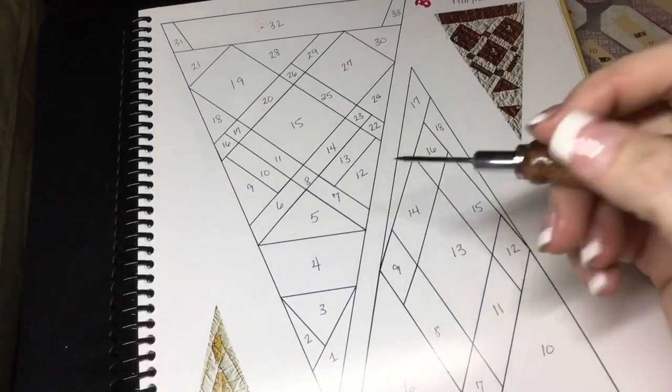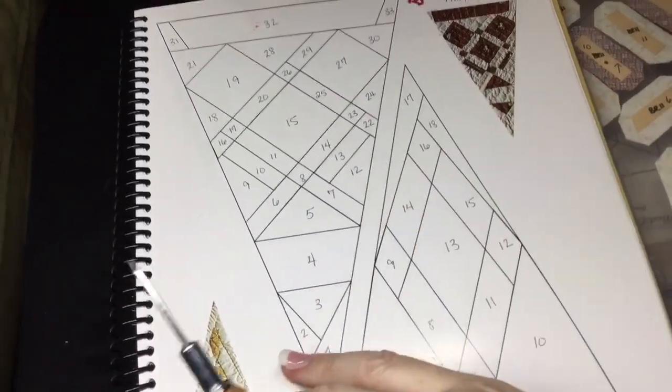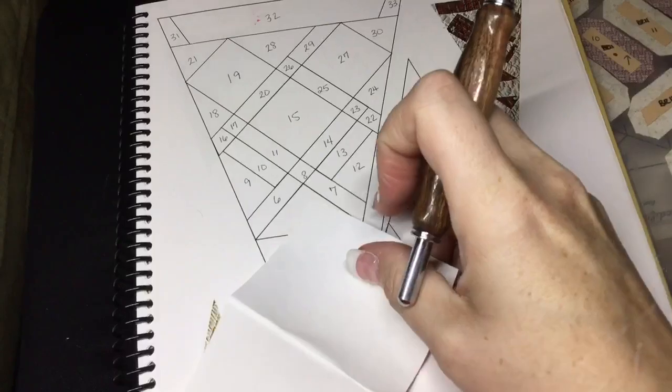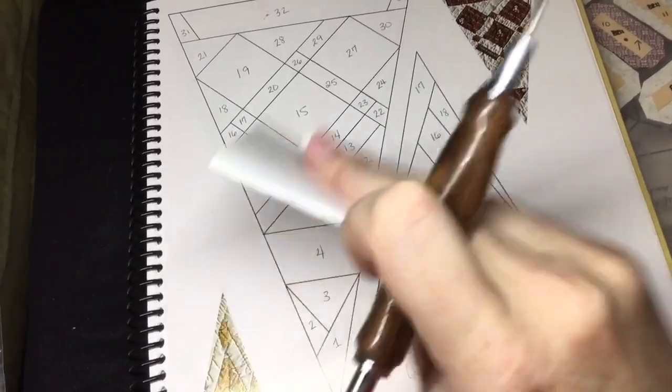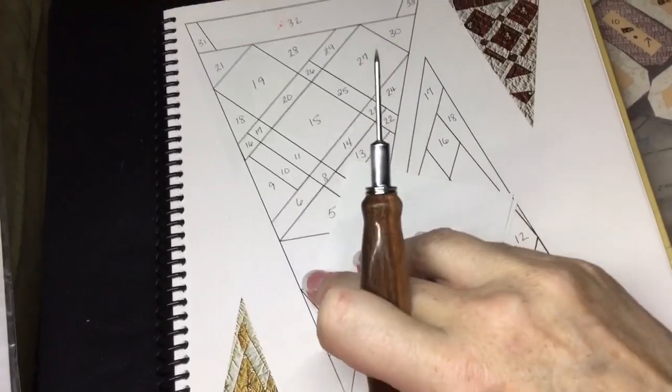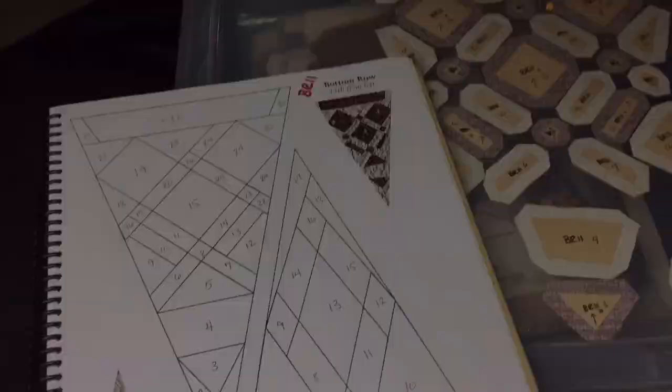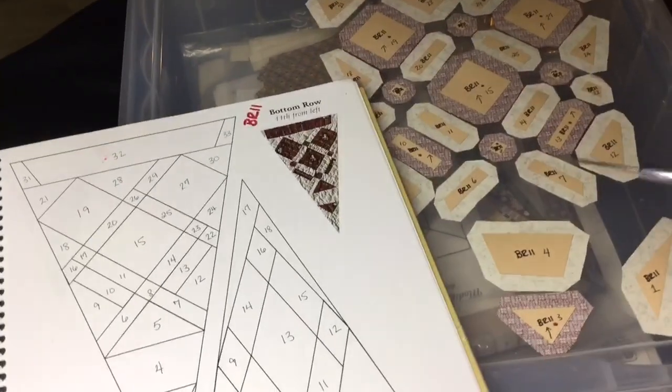So right now I'm missing number five. I'm going to trace this piece on here because it's see-through, because it's that thin. I will trace this piece and then fold it after I glue it, and then I'll have a new piece and I'll relabel it.